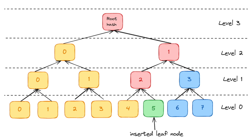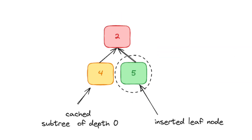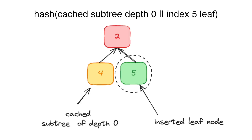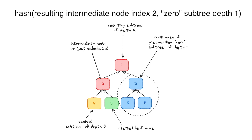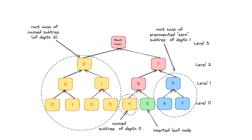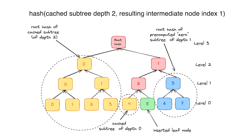Now let's add an odd index node at index five. Since it has an odd index, it doesn't need to be stored as a cached subtree. We hash the cached subtree of depth zero (leaf index four, on the left) with the new leaf at index five (on the right), and cache the result as a subtree of depth one since there are no zero values in it. We then take that intermediate node at index two and hash it (even index, so on the left) with a zero subtree of depth one on the right. The resulting intermediate node at index one, level two, has an odd index, so it goes on the right and is hashed with a cached subtree of depth two on the left. We store the result as the updated Merkle root.